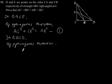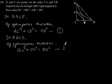Now consider triangle BCD. Again by applying Pythagoras theorem in triangle BCD, we will get BC square plus CD square is equal to BD square. Let's say this is equation 2.